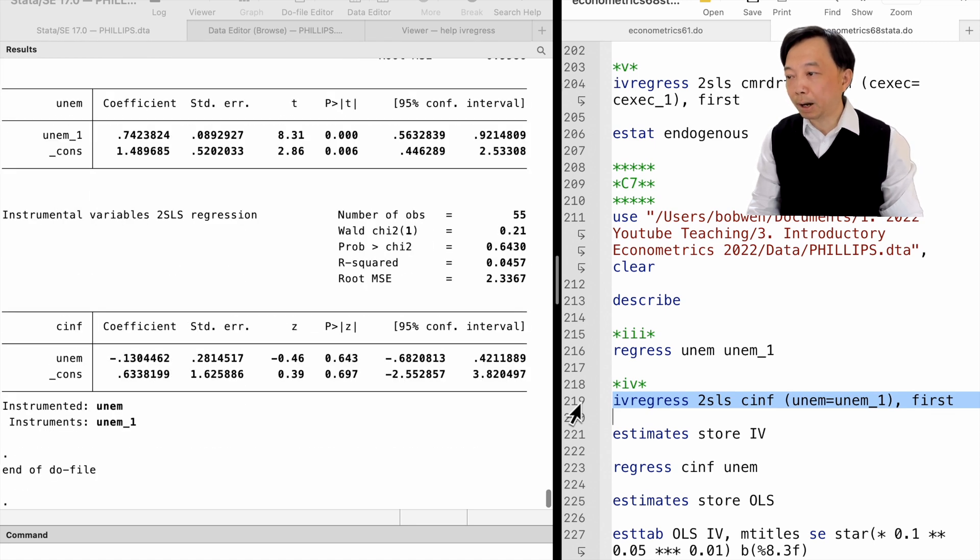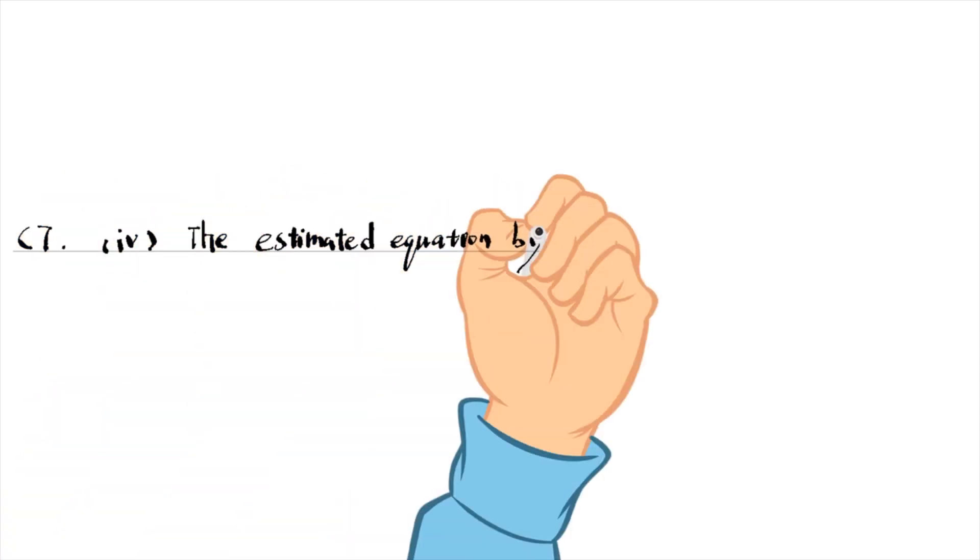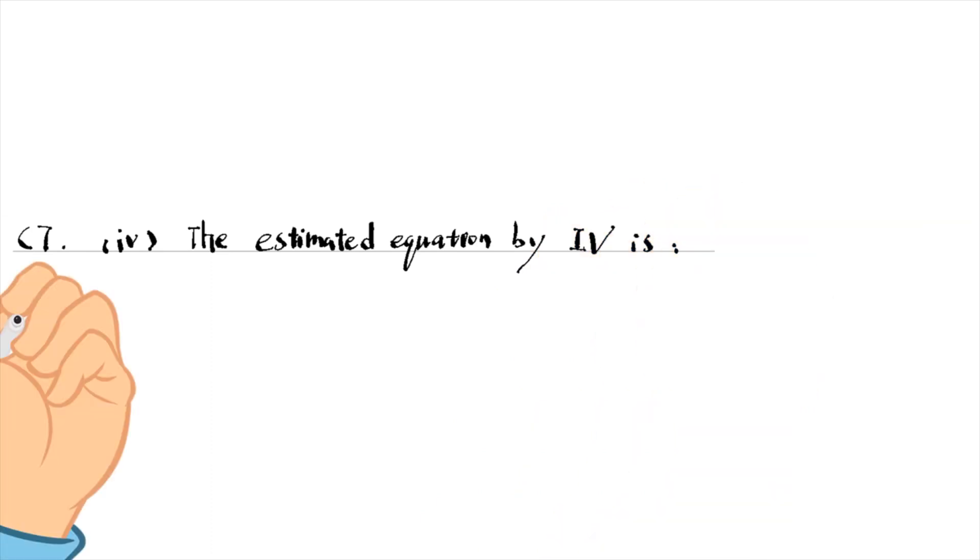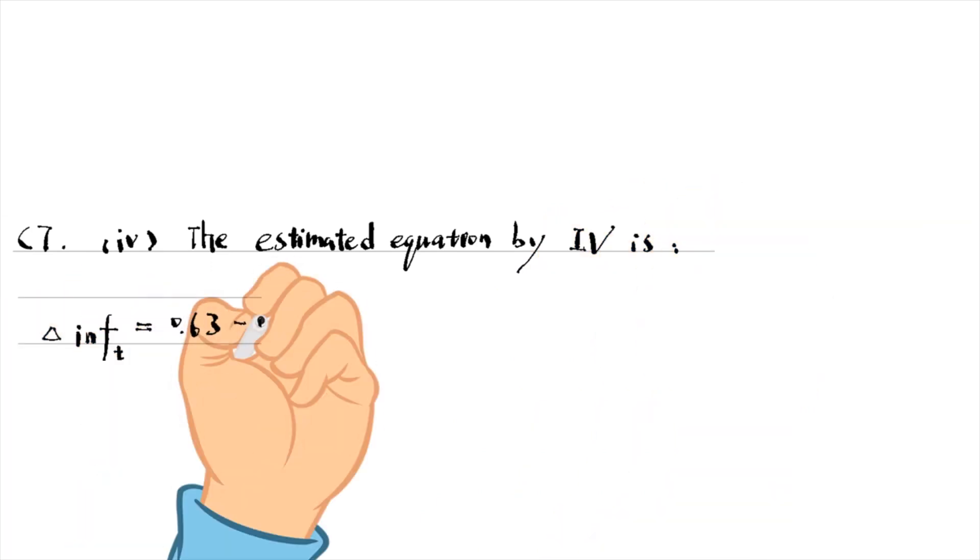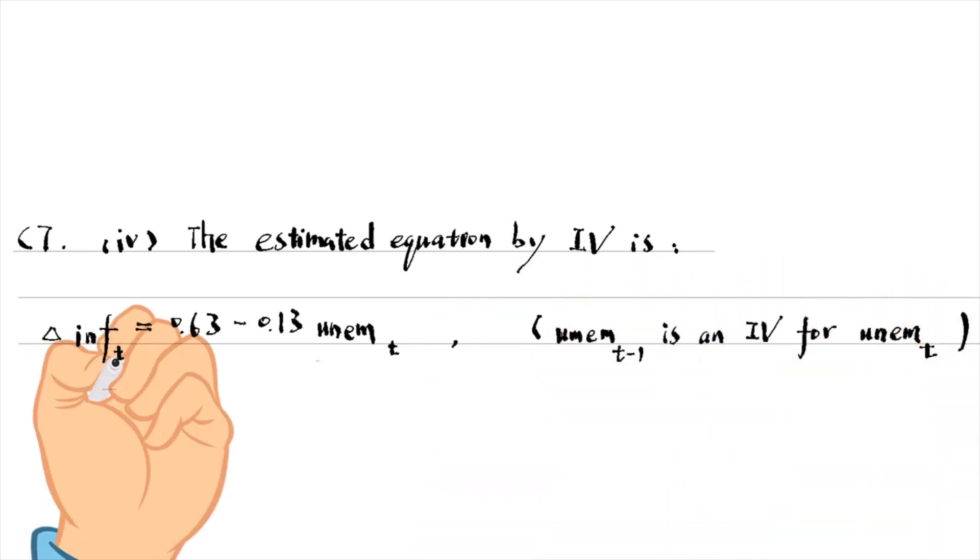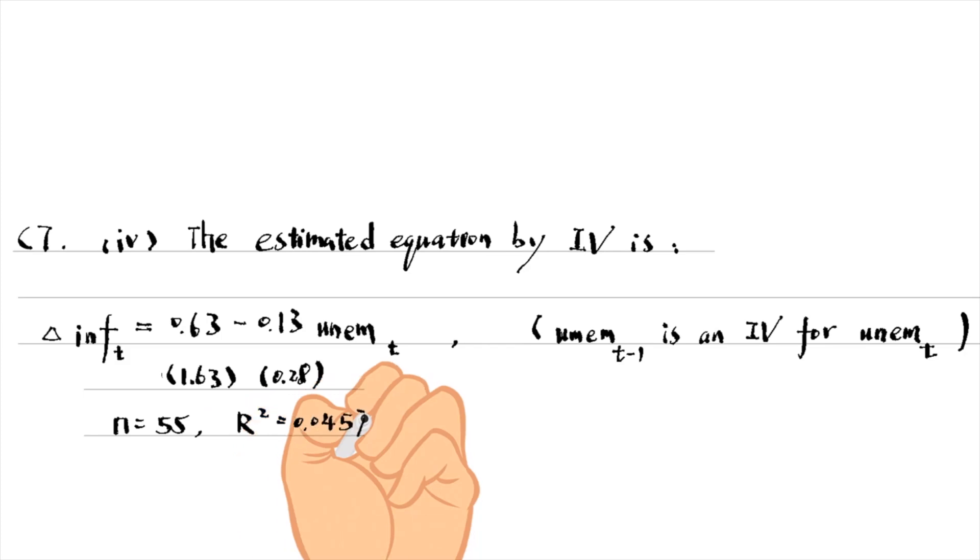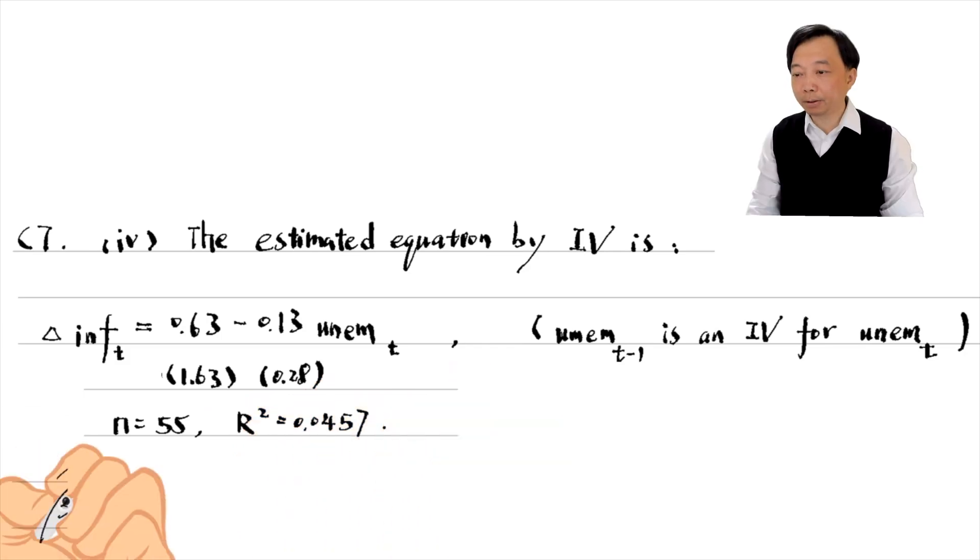The estimated equation by IV is as follows. The slope estimate is not statistically significant at any conventional level.